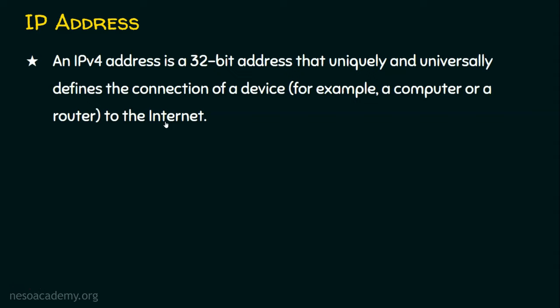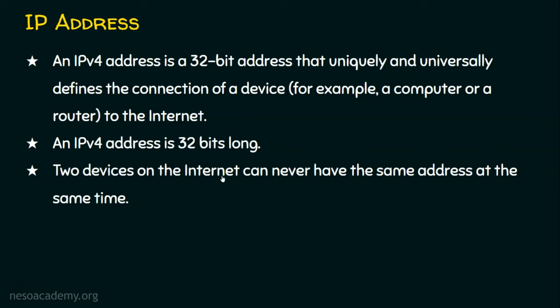From my device, it has to reach Google's computer. Throughout the network, that is in the internet, it needs IP addresses. An IPv4 address is 32 bits long, which means it is 4 bytes. Any IPv4 address is of 32 bits long. We also have another version of IP address, which is IPv6 address, which is of 128 bits long. We will be talking about IPv6 address in the coming lectures. Two devices on the internet can never have the same address at the same time.